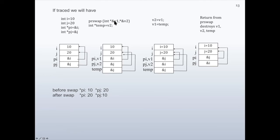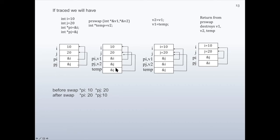v1 and v2 are references to pi and pj respectively, so no extra memory is reserved — they represent the same items. The content of v1 is the address of i, and the content of v2 is the address of j. Then temp, a pointer to integer, is initialized by v2, so temp also holds the address of j and points to j.